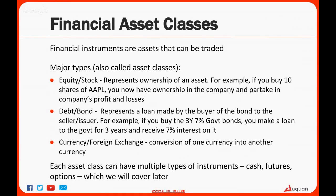So what exactly trades on these markets? You trade financial instruments on an exchange, and these can be of any of these types, which are called asset classes: equity, debt, currency, commodities, and so on. I will explain what each of these terms means. Equity, the most common type of asset class, represents ownership of an asset. If you buy 10 shares of Apple, you now have ownership in the company. A debt represents a loan made by the buyer of the bond to the issuer. So if you buy a 3-year 7% government bond, you make a loan to the government for 3 years and receive 7% interest; at the end of 3 years, you also receive the original loan amount back. Currency markets are simply conversion of one currency into another. Also note that each of these asset classes can have multiple types of instruments — cash, futures, options — which we will cover in future tutorials.